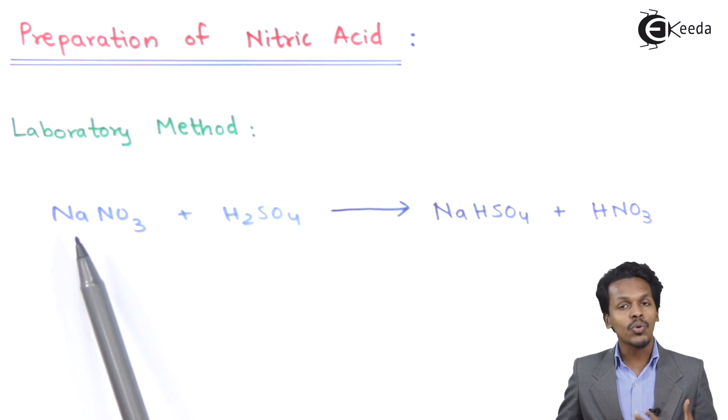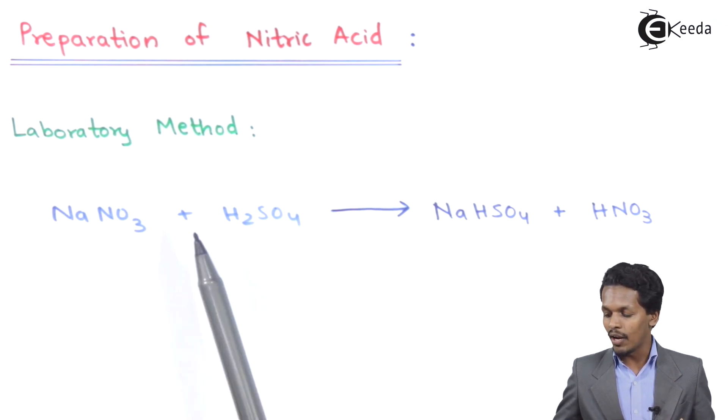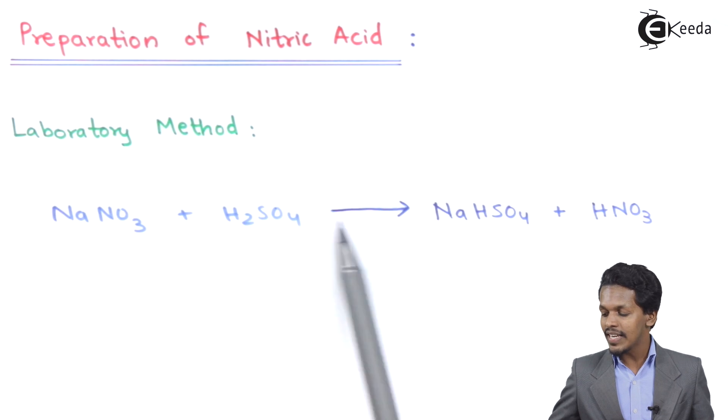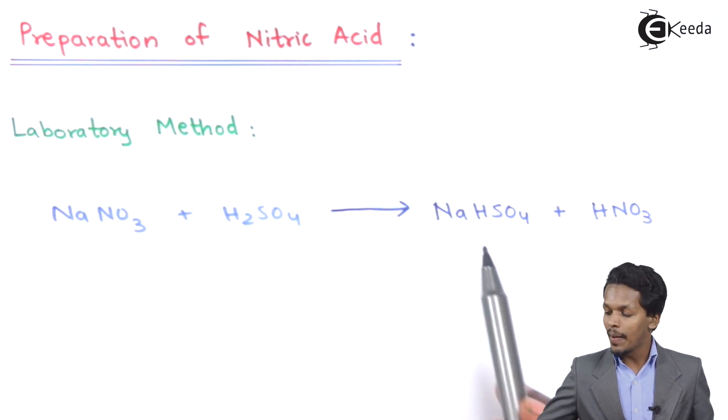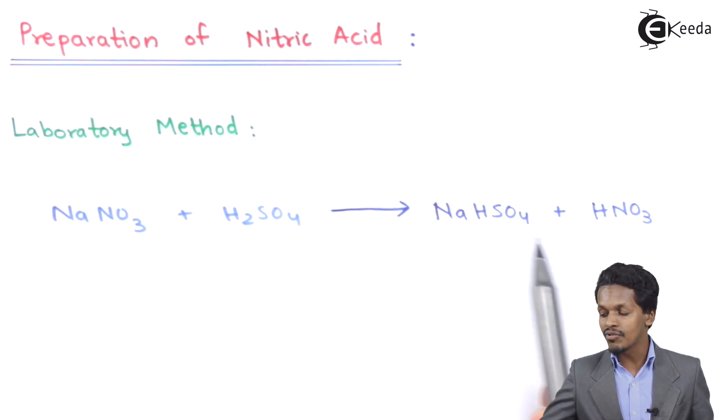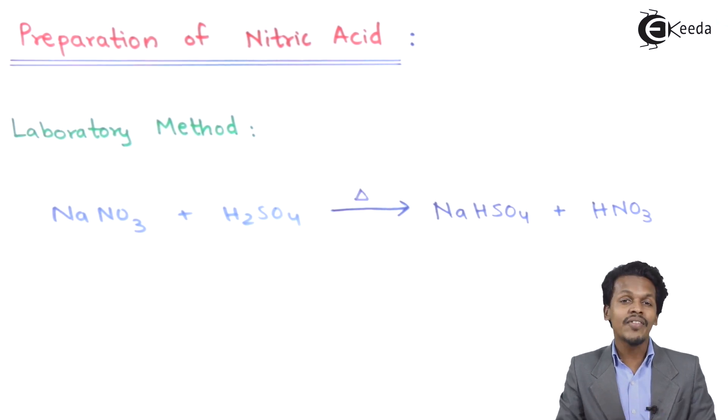In this case, we consider sodium nitrate, NaNO3, and we react it with sulfuric acid. The reaction proceeds such that the product we get is sodium hydrogen sulfate, along with nitric acid, HNO3. This is a method where we can obtain nitric acid in small scale.